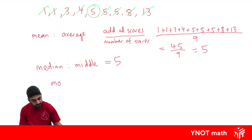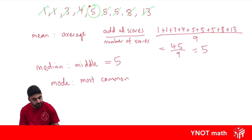The mode is easy. It's just the most common score. Here the most common score is 5, because there are three of them. No other score appears three times, so the mode is also 5.